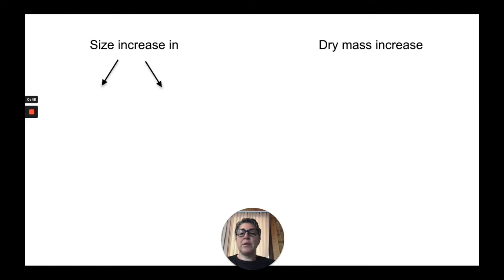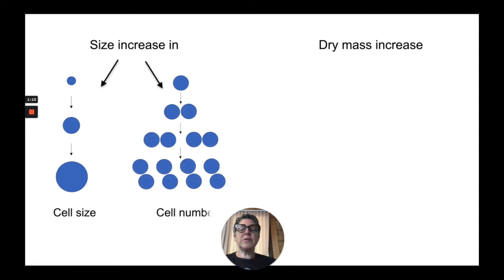Size increase occurs in two different ways in different types of organisms. First, we're looking at an increase in the size of an actual cell. Typically we'll find this in most living organisms, but this can be relevant to single-celled organisms. We also see a size increase in the number of cells. This typically has to do with multicellular organisms.